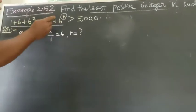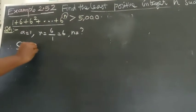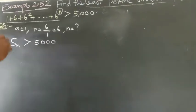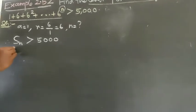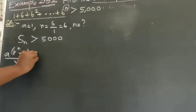Therefore Sn greater than 5,000. The Sn formula: a into r power n minus 1 divided by r minus 1, greater than 5,000.